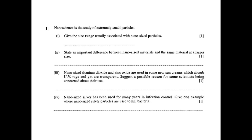Here's the first exam question. Part one asks you to give the size range associated with nano-sized particles. Part two asks you to state an important difference between nano-sized materials and the same material at a larger size. Part three asks you to suggest a possible reason that some scientists are concerned about their use. Part four asks you to give an example where nanosilver is used to kill bacteria. Please pause the video and have a go at this question.